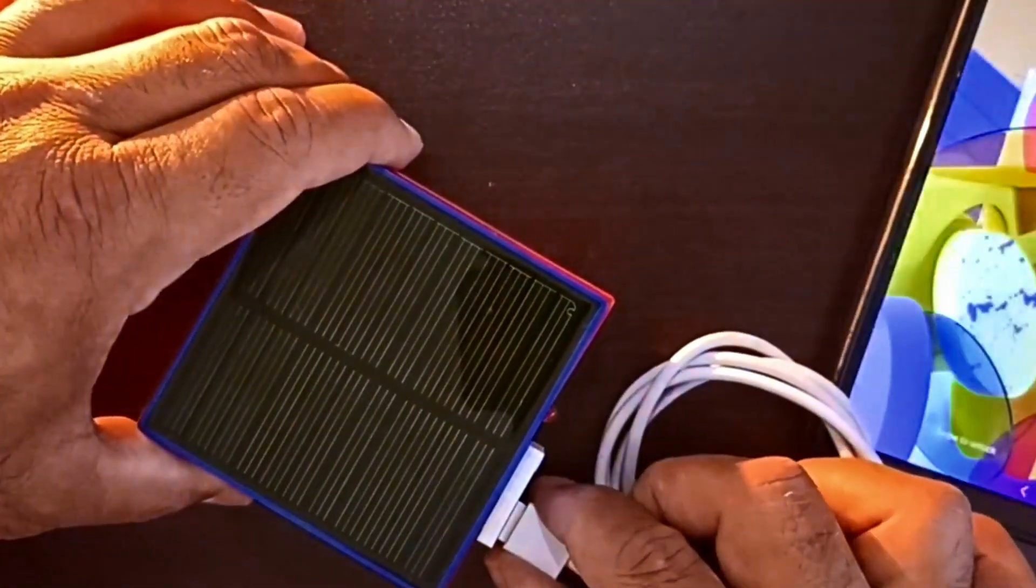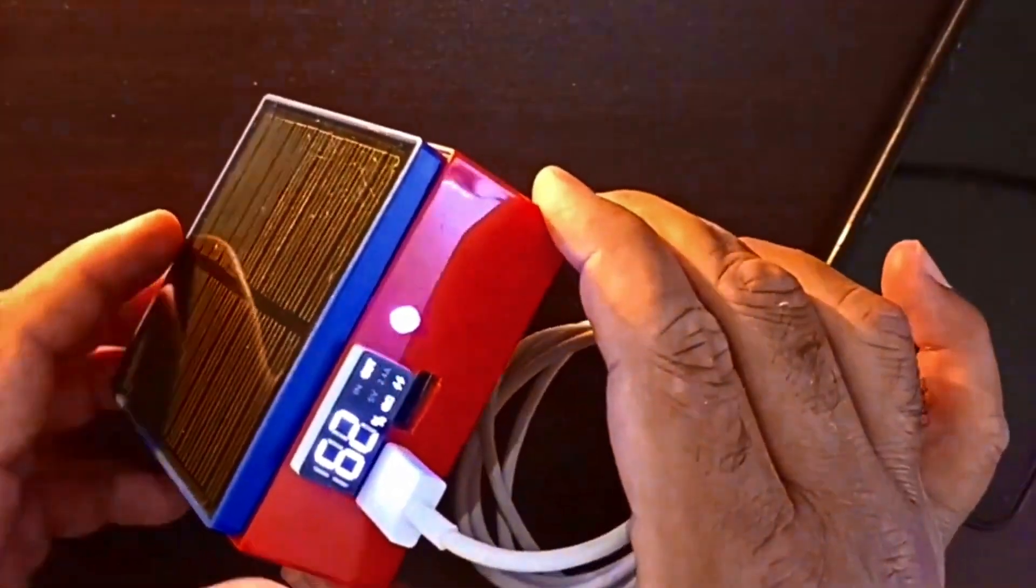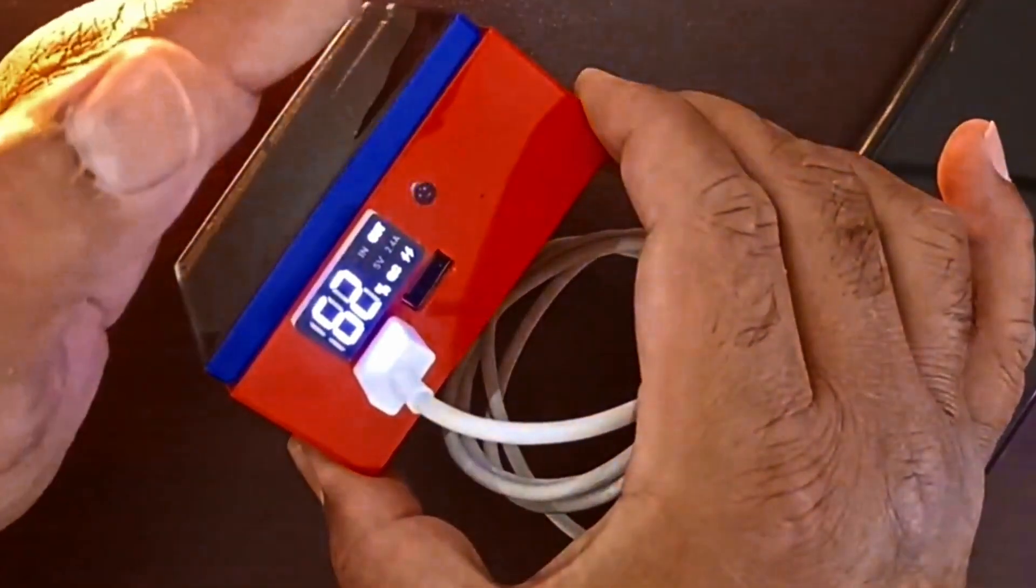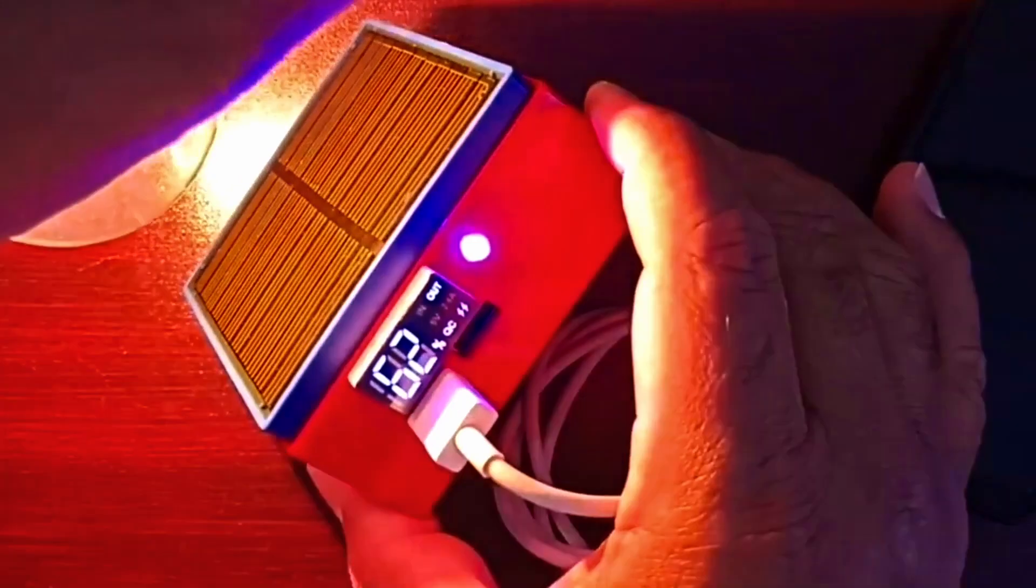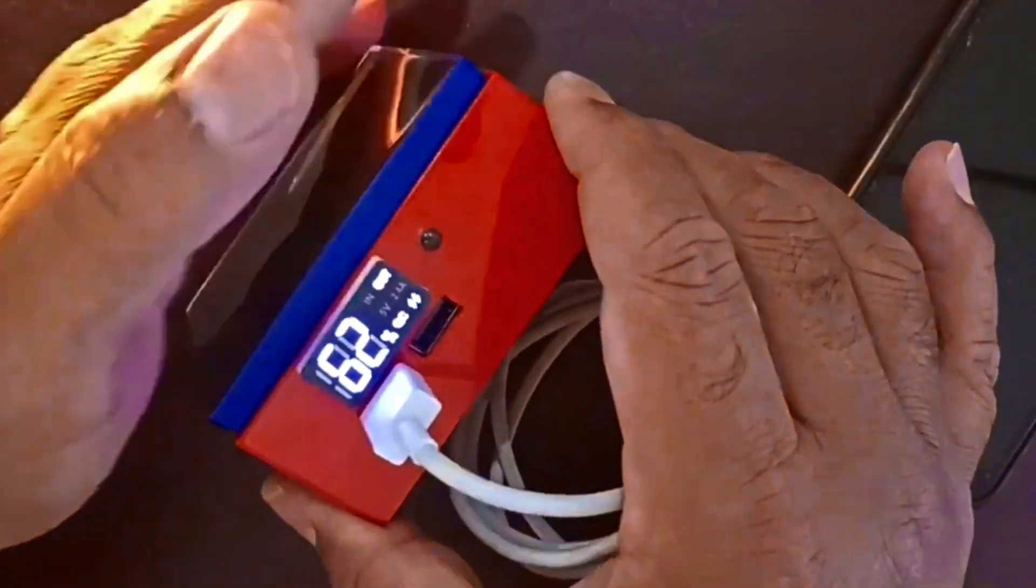Unplugged, replug, stable connection, no glitches. Love it. Cover the panel, LED dims. Uncover, bright again. Solar is working perfectly. And that's it, DIY solar power bank complete. Love this build. Smash that like button and subscribe for more DIY projects.